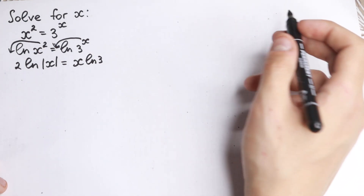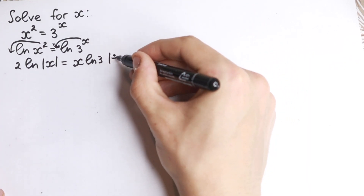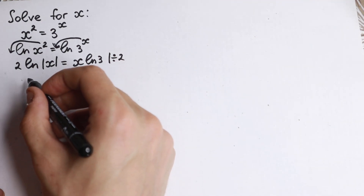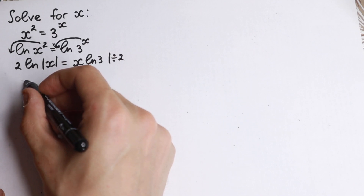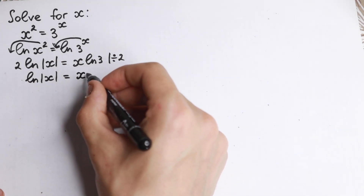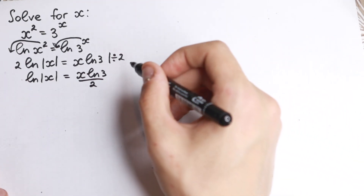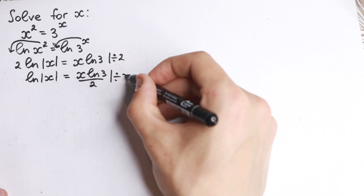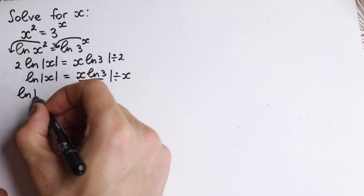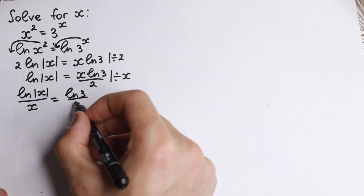I hope you understand this step. Now let's find x step by step. Let's divide both sides by 2. If we divide by 2, we cancel the 2, and we get natural log of absolute value of x equal to x times natural log 3 over 2. Then let's divide both sides by x. On the left hand side we have natural log of absolute value of x divided by x, equal to natural log 3 divided by 2.